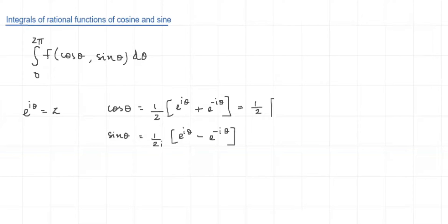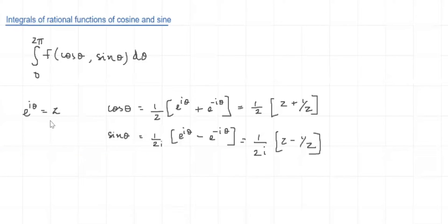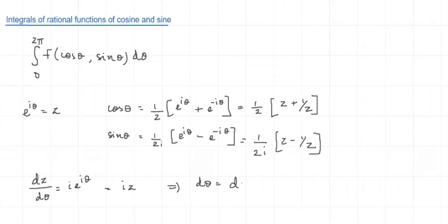Substituting e^(iθ) = z, I can rewrite cosθ as (1/2)(z + 1/z). Since f is rational in cosθ and sinθ, we obtain f as a rational function of z. For the differential, dz/dθ = ie^(iθ) = iz, hence dθ = dz/(iz).